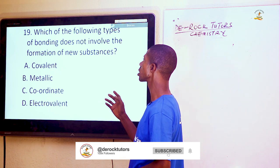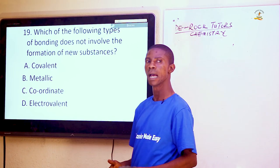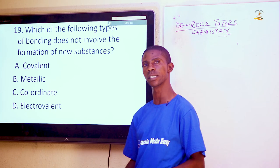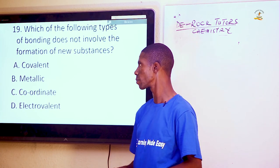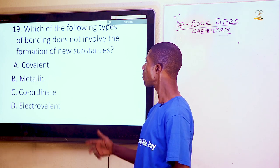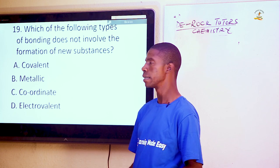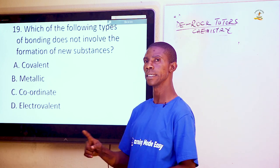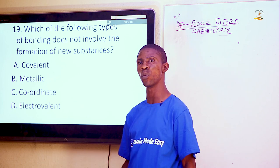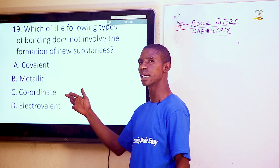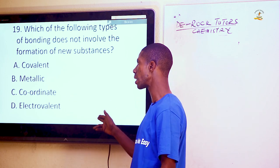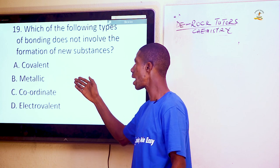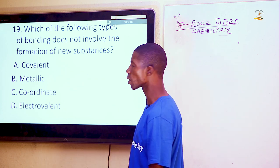Question 19: Which type of bonding does not involve the formation of new substances? Atoms bond to attain the stability of the nearest noble gas. Covalent bonds involve electron sharing between non-metals; electrovalent or ionic bonds involve electron transfer from metal to non-metal. In metallic bonding, there is no transfer of electrons from one atom to another, so the answer is metallic bond.